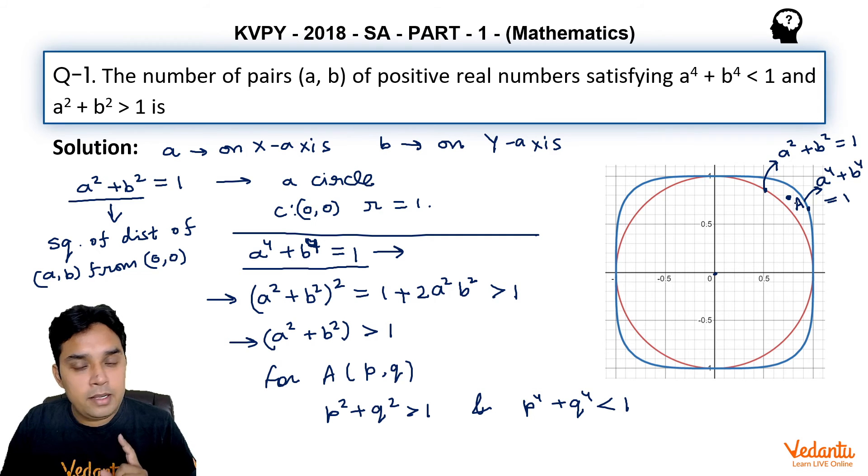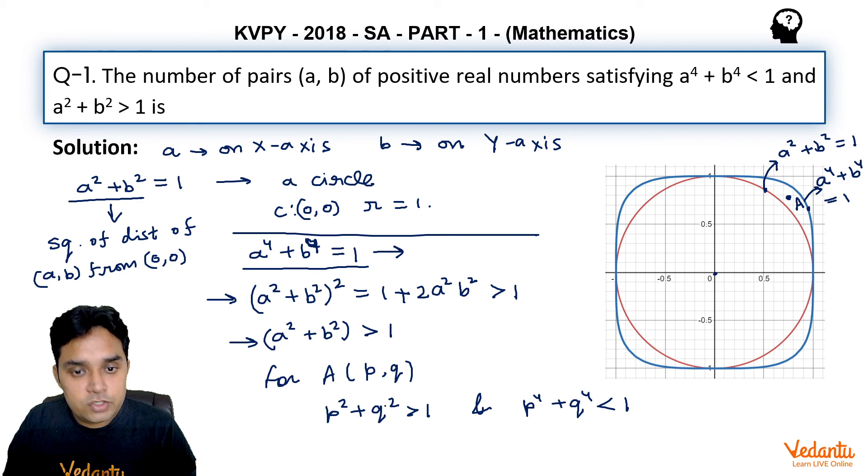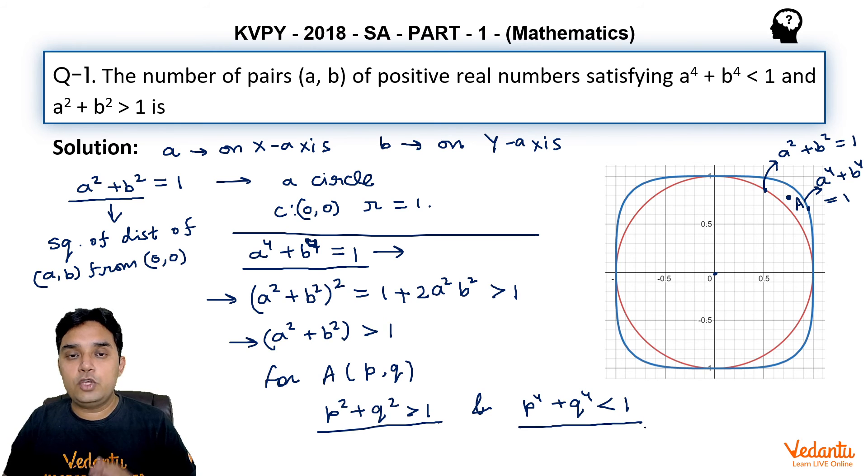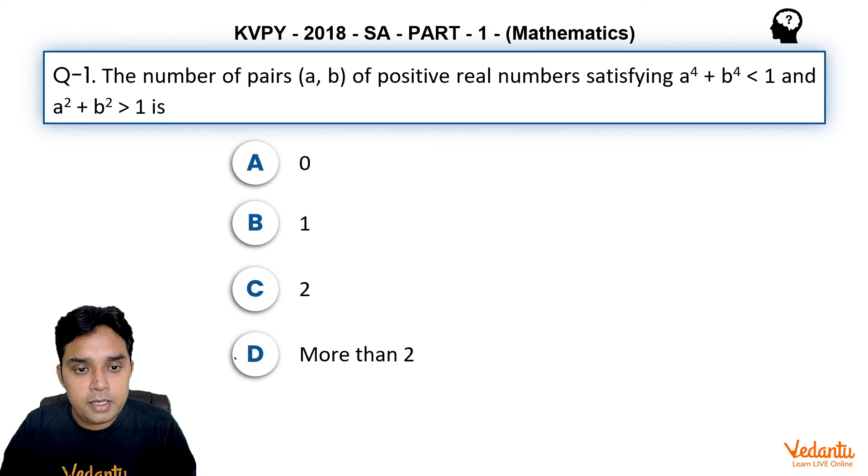We can say for all such points lying between these two regions, they will be satisfying both these inequations given in the question. So we can expect to have infinite such points that will satisfy the given equations, and hence the answer for this question should be d.